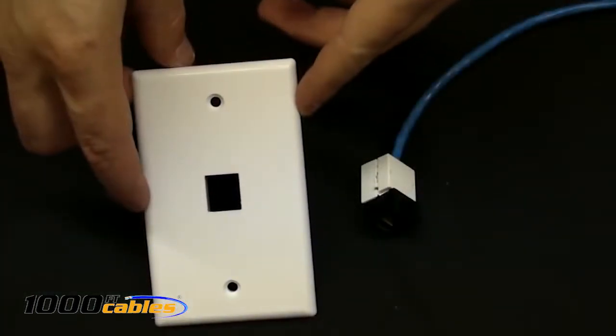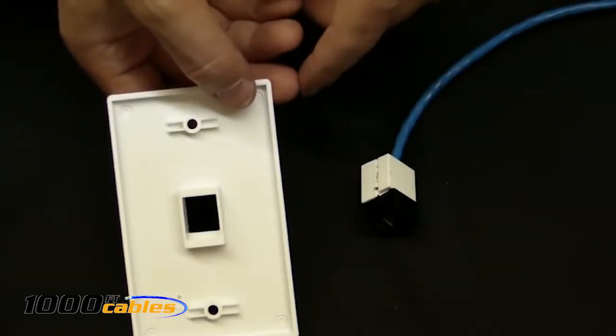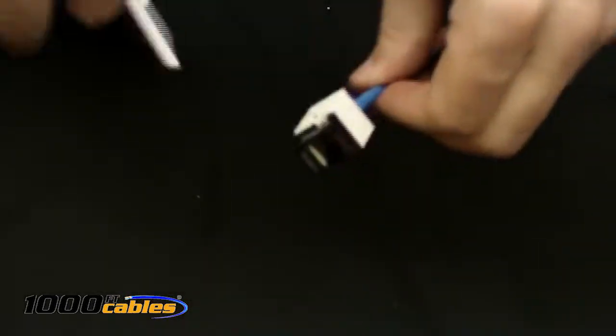For the final step, you're going to take a wall plate, which you can purchase from us directly at FireFold.com, just a plain basic white wall plate. See the inside? See the outside?